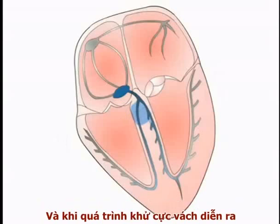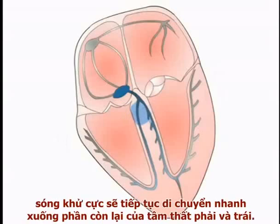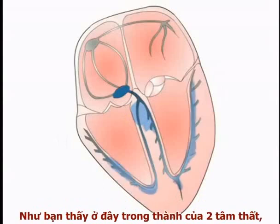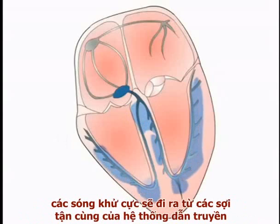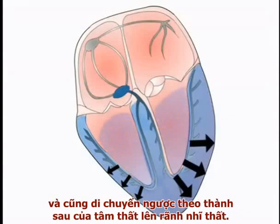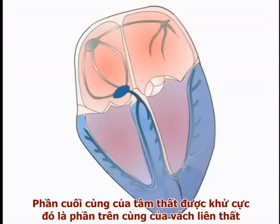As septal depolarization is taking place, the depolarizing wave begins to spread rapidly through the bulk of the left and right ventricles. In the walls of the ventricles, depolarization spreads from the terminal fibers of the conducting system outwards from the endocardium towards the epicardial surface of the heart, and also back along the ventricular wall to the atrioventricular groove. The final piece of muscle to depolarize is the upper part of the interventricular septum, again by movement of current from left to right.